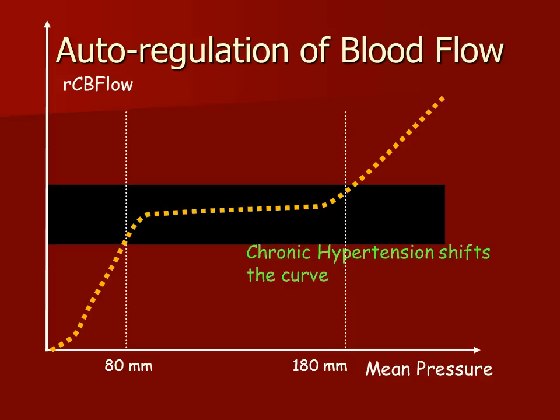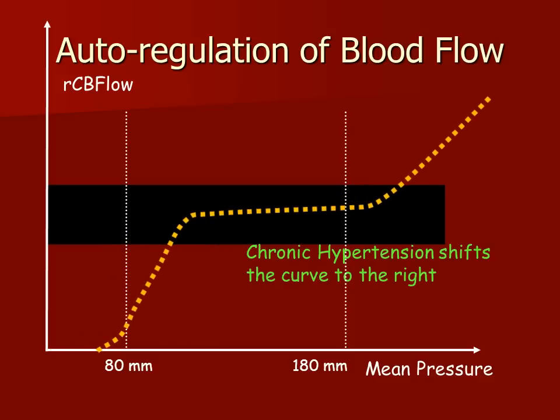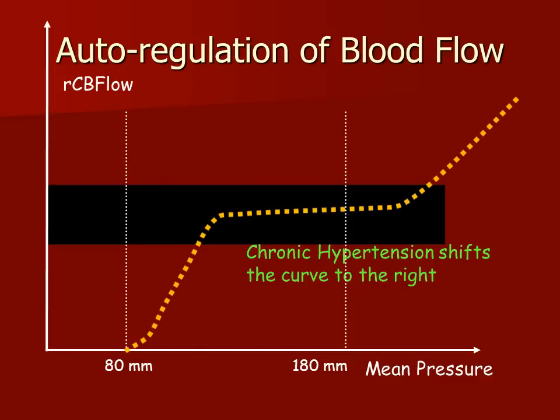In patients who have chronic hypertension, this curve is shifted to the right. In these patients, if you lower their blood pressure into what would otherwise be a normal range, they may actually reduce their cerebral perfusion.